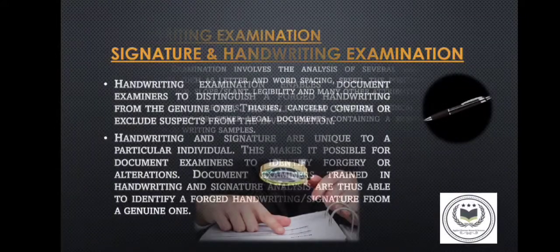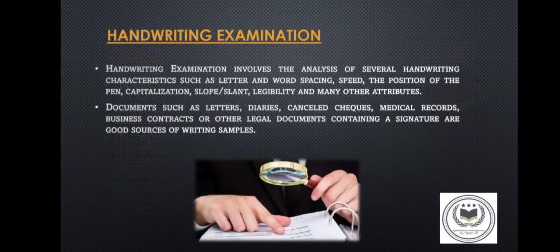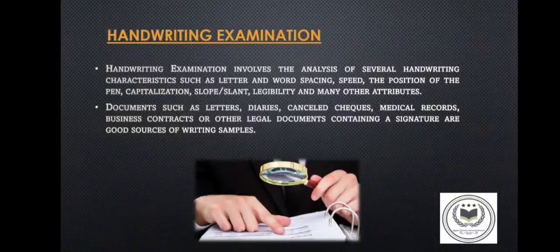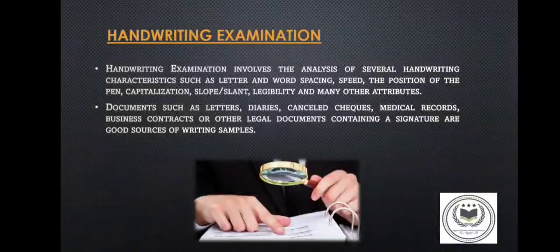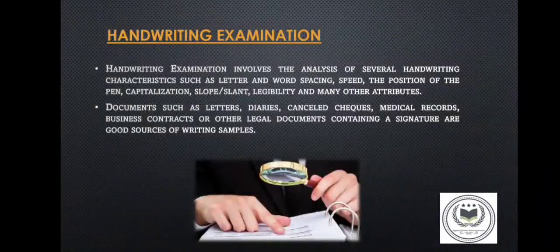Handwriting examination involves the analysis of several handwriting characteristics such as letter and word spacing, speed, the position of the pen, capitalization, slope, slant, legibility, and many other attributes. Documents such as letters, diaries, cancelled checks, medical records, business contracts, or other legal documents containing a signature are good sources of handwriting examples.